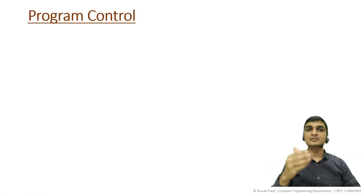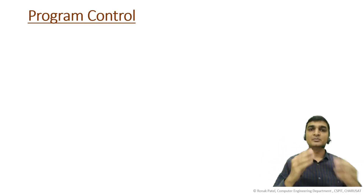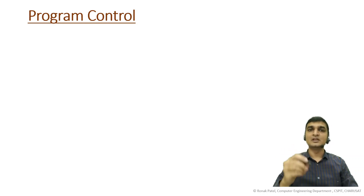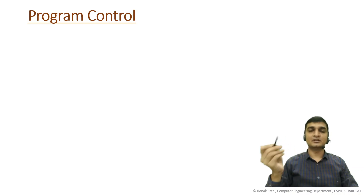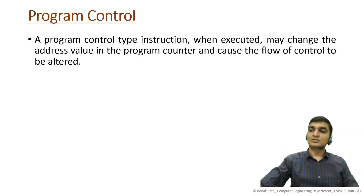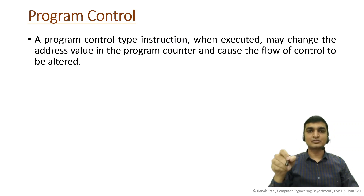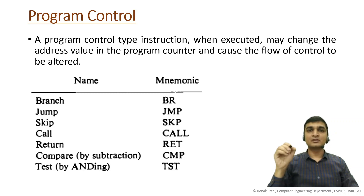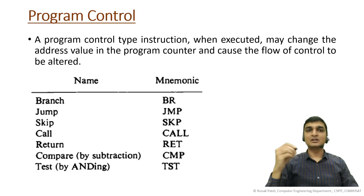Program control instructions actually alter the flow of execution. In the previous lectures, the instructions we have seen do not alter the program flow, but program control instructions will alter your program flow. They will move you from the next instruction to some other instruction based on some condition. When executed, a program control instruction may change the address value in the program counter, causing the flow of control to be altered — the program counter is loaded with some other value instead of just being incremented.